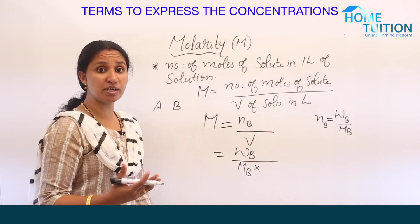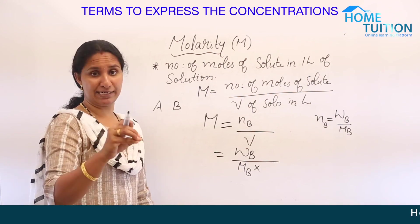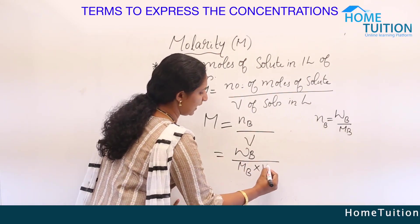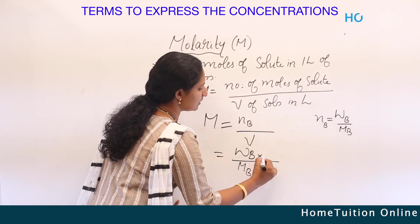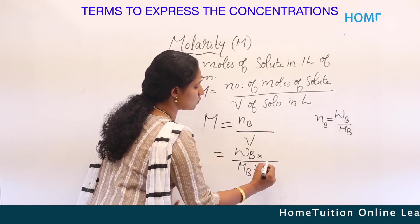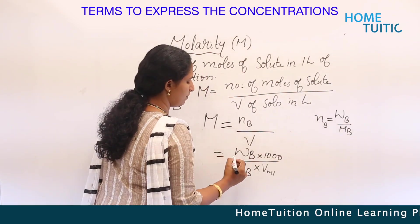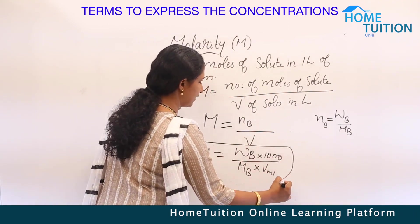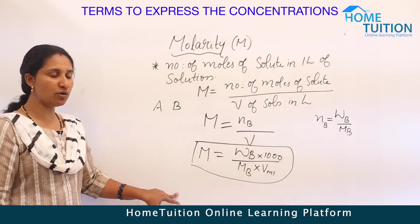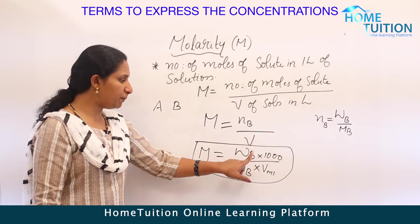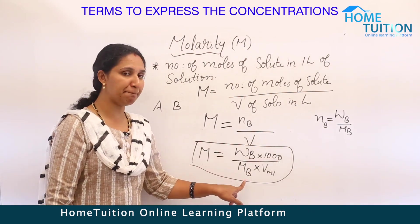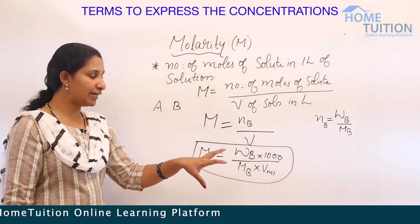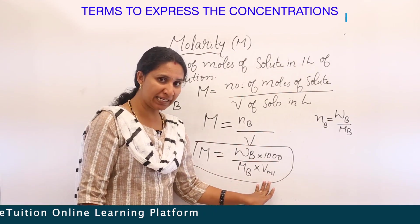If the volume is given in milliliters, we convert by dividing by 1000, so we multiply by 1000 in the equation. Therefore, molarity equals WB into 1000 divided by MB into V_mL.